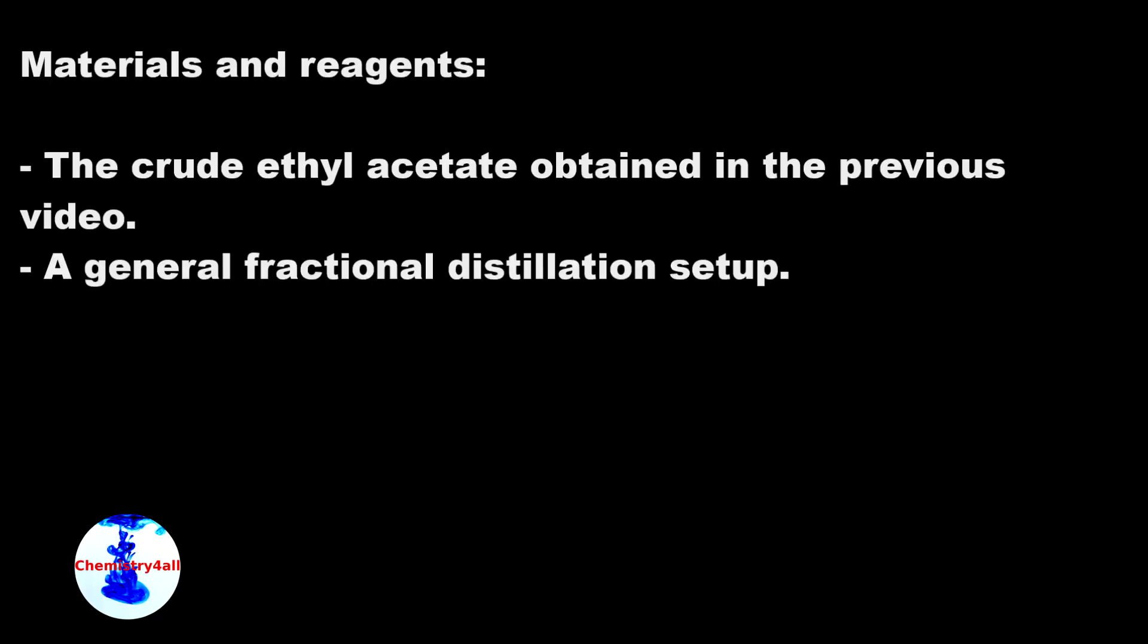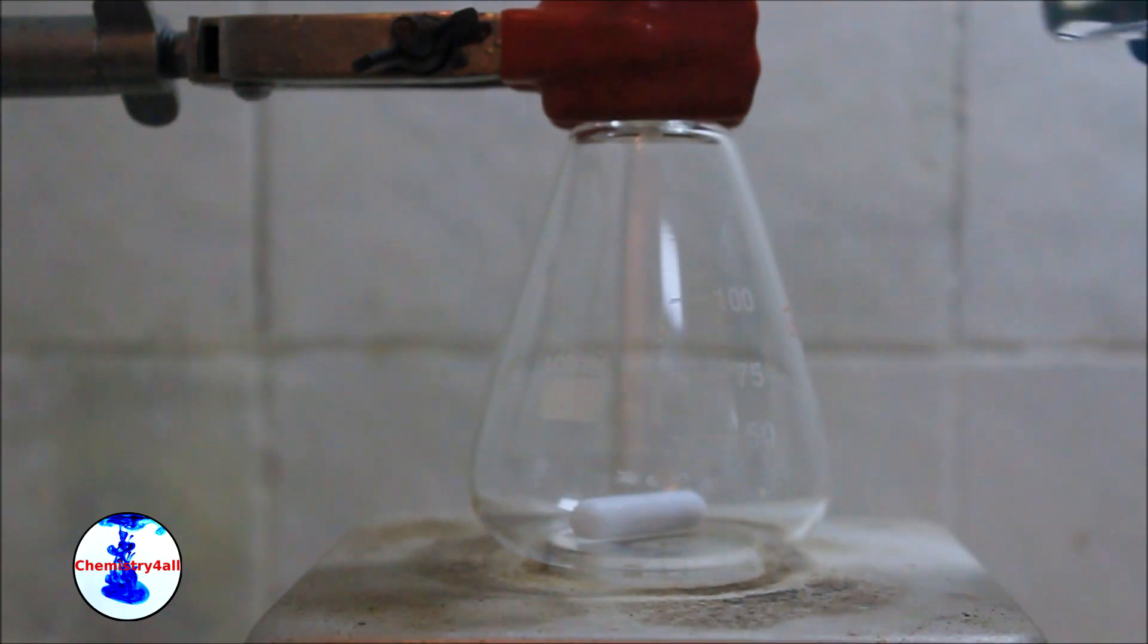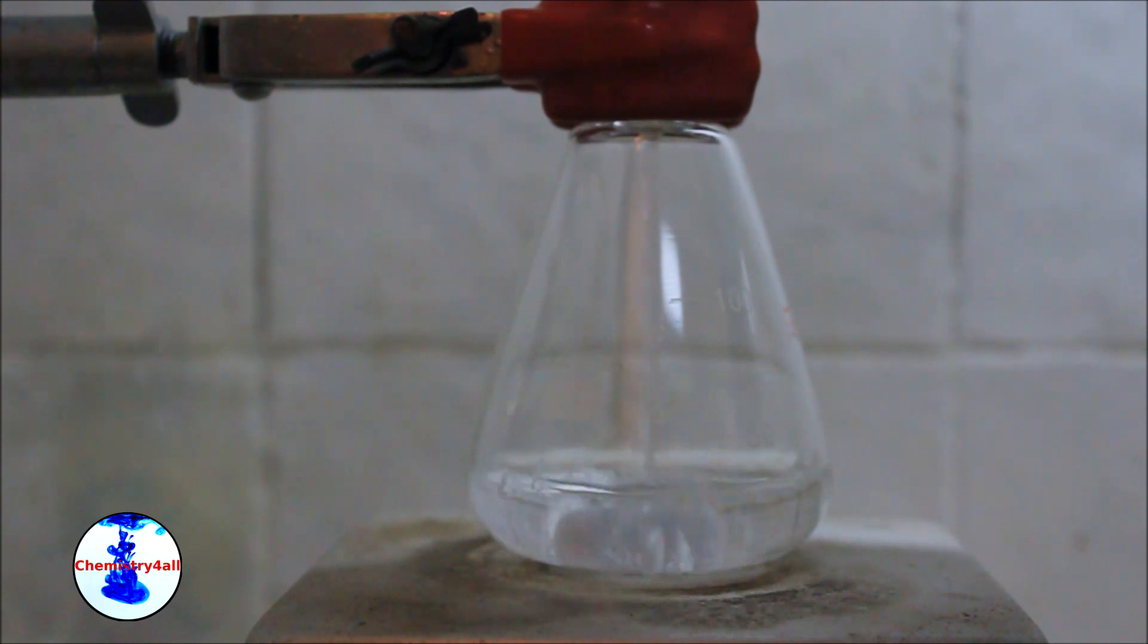For this experiment, we will be using the crude ethyl acetate obtained in a previous video and a general fractional distillation setup. First, the crude ethyl acetate is poured in a clean and dry round bottom flask equipped with a magnetic stirring bar.